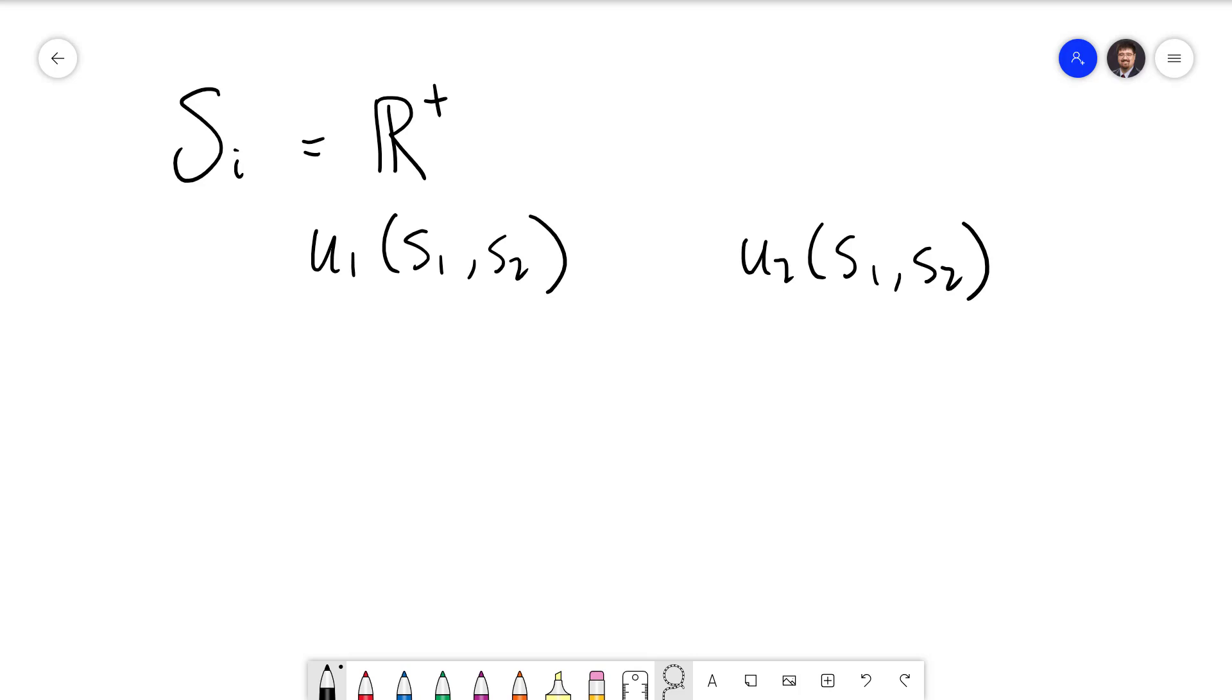To find the best response functions, we need to use partial derivatives. Remember that player one only has a choice over S1, player two only has a choice over S2. And so player one will maximize their utility by taking the partial derivative of their own utility function with respect to S1 and set that equal to zero. That's going to be their first order condition. Player two is going to do the same thing. They will take the partial derivative of U2 with respect to S2 and set that equal to zero. That's going to be their FOC. The S1 and S2 that solve this system of equations is going to give us our Nash equilibrium of S1 star, S2 star.